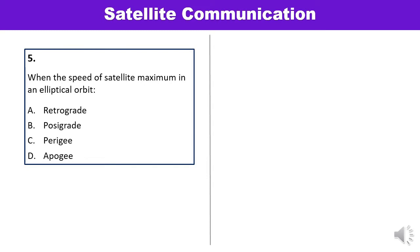Question 5: When is the speed of a satellite maximum in an elliptical orbit? Options are retrograde, posigrade, perigee, and apogee. The speed of a satellite is greater whenever it is closer to the earth, and that closest point is known as the perigee. Answer C is correct.